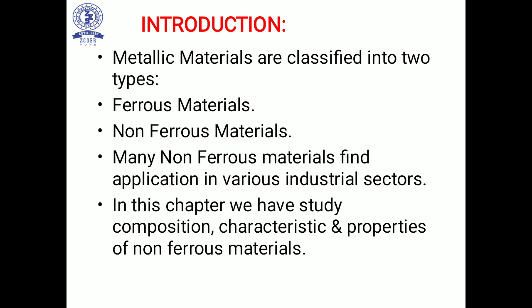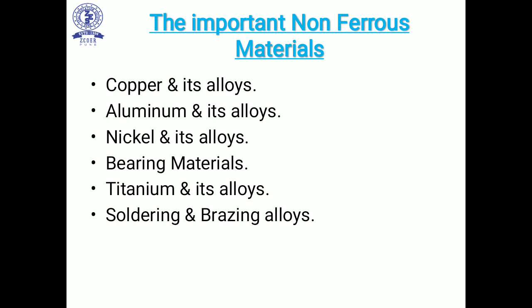In the introduction of Unit 6, metallic materials can be classified into two types: ferrous materials and non-ferrous materials. Many non-ferrous materials find applications in various industrial sectors. In this chapter we discuss the composition, characteristics and properties of non-ferrous materials. The important non-ferrous materials are copper and its alloys, aluminium and its alloys, nickel and its alloys, bearing materials, titanium and its alloys, and soldering and brazing alloys.